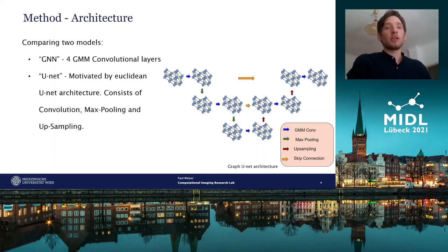After each pooling layer, a new graph has to be defined. This is done by averaging the coordinates of the vertices in each window. The value of the new node is given by the max pooling function. Two vertices in the new graph are connected by an edge if their Euclidean distance is smaller than a certain threshold.